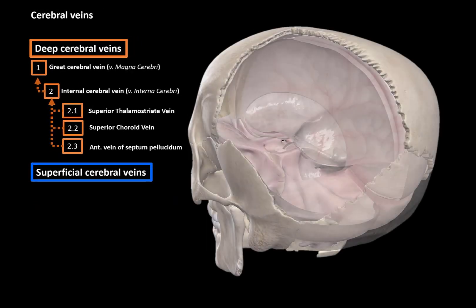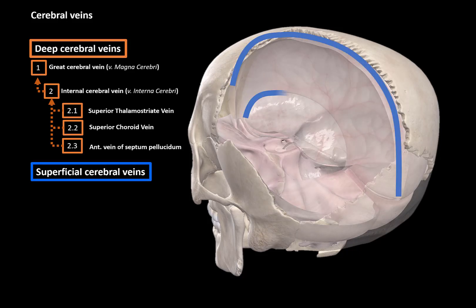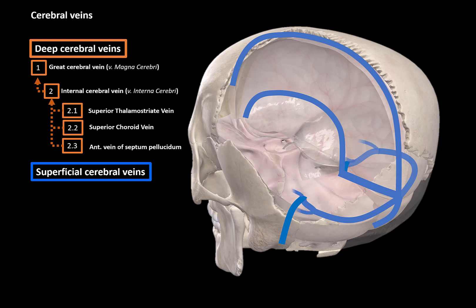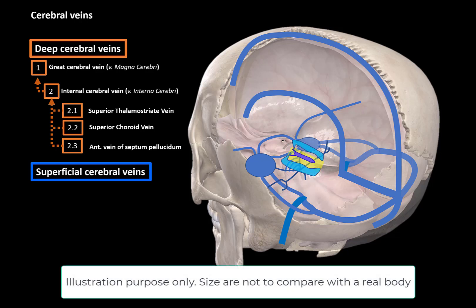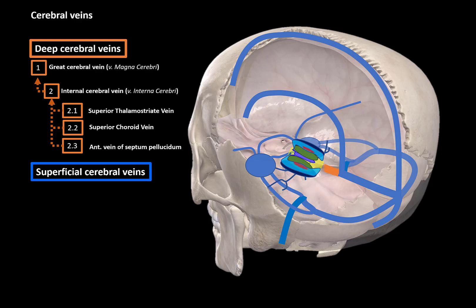Let's quickly recap the deep cerebral veins. We have the superior sagittal sinus and inferior sagittal sinus, the straight sinus forming the confluence of sinuses, the occipital sinus, transverse sinus, sigmoid sinus, and the internal jugular vein. We have the superior and inferior petrosal sinuses draining from the cavernous sinus, the sphenoparietal and intercavernous sinuses, and the basilar plexus. The great cerebral vein continues as the basal vein and receives blood from the anterior thalamostriatal vein. The internal cerebral vein receives blood from the superior thalamostriatal vein, the superior choroid vein, and the anterior vein of the septum pellucidum.